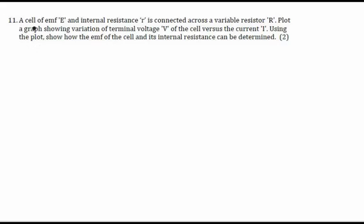In this example, a cell of EMF E and internal resistance r is connected across a variable resistor R. We have to plot a graph showing the variation of terminal voltage V of the cell versus the current flowing through the circuit. We need to plot a graph between the voltage V and the current I.